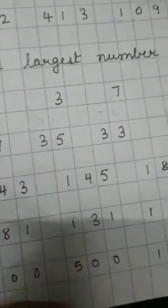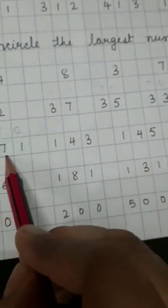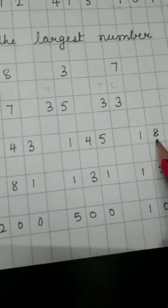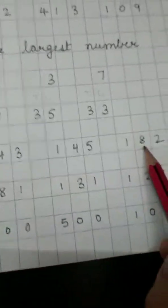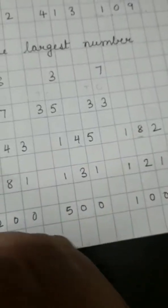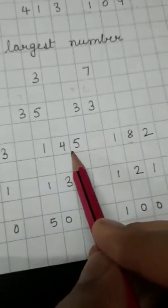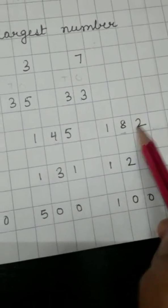Now, in the 10's place, we have 7, we have 4, we have 4, we have 8. So, which is the biggest over here? 8. So, 171, 143, 145, 182. 182 is the largest number.